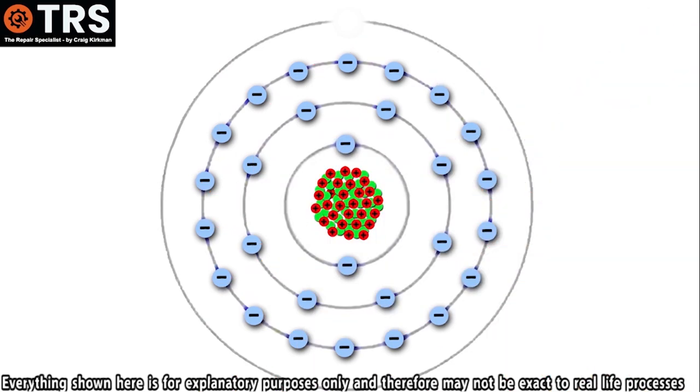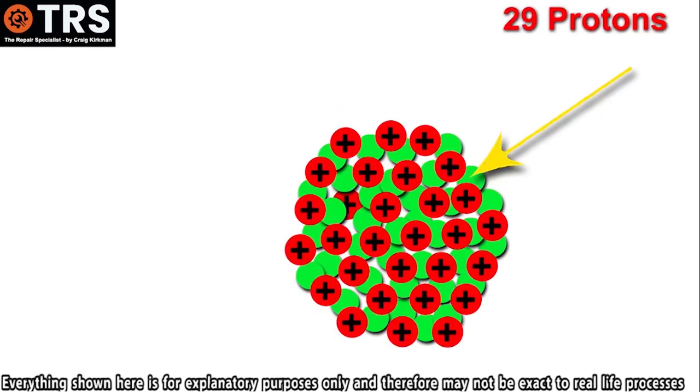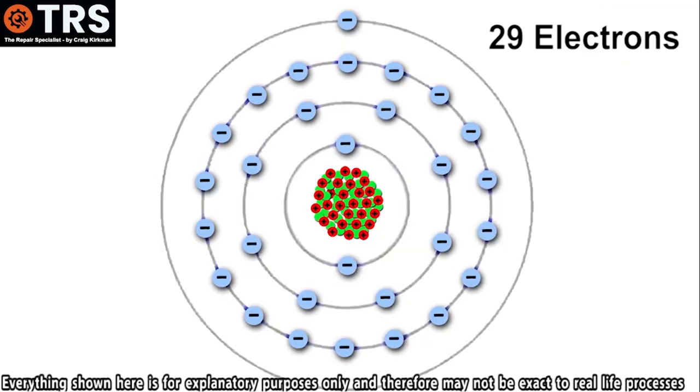And this atom now doesn't just sit there without an outer electron. And that's because now the electron has moved away, the electrical charge of this atom has changed. It's changed because when all the electrons were present, 29 of them, bearing in mind that all the 29 electrons have a negative charge. For the copper atom, this matched the 29 positively charged protons within its nucleus.